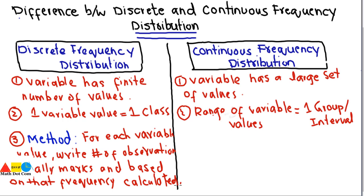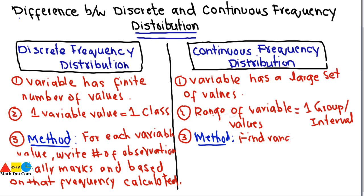In the case of continuous frequency distribution the method is different. There are three steps: first, find the range from the maximum and minimum value. Then, decide the number of classes based on your data.